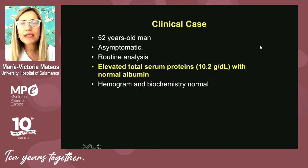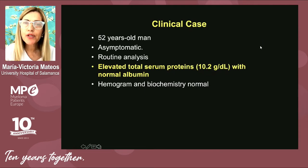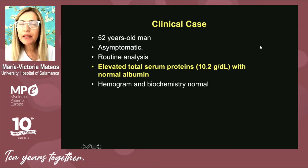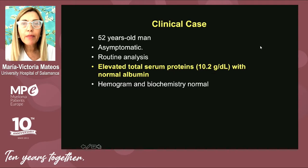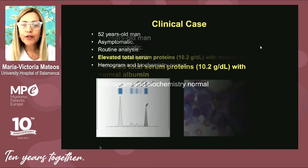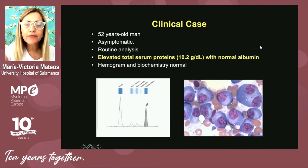Here you can see a clinical case — the most common way in which we do the diagnosis of either monoclonal hemopathy or smoldering myeloma. Asymptomatic patients in a routine analysis show elevated total serum proteins with normal albumin. The hemogram and biochemistry are usually normal, and general practitioners usually perform serum protein electrophoresis in order to identify the M component.